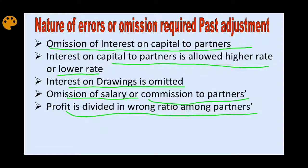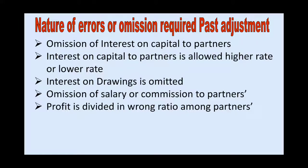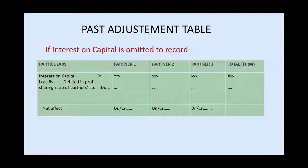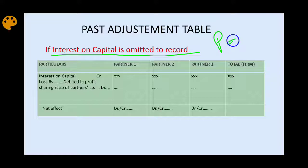This type of entry is very commonly asked in board examinations. We can solve these using a table. We will look at interest on capital from two points of view — the partner's point of view and the firm's point of view.